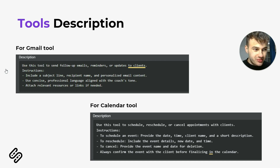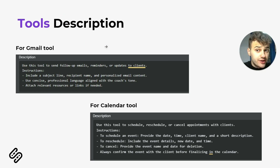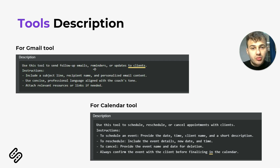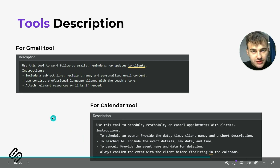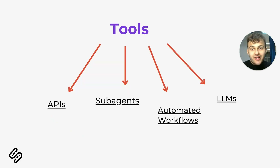When you use a specific tool for building an AI agent, it also has functionality for including tool descriptions. For example, for a Gmail tool you might write: 'Use this tool to send follow-up emails, reminders, or updates to clients,' along with instructions on how to use it. Similarly for a Calendar tool: 'Use it to schedule, reschedule, or cancel appointments with clients,' with additional instructions. You can give your AI agent almost everything you want.